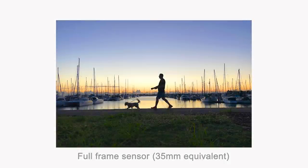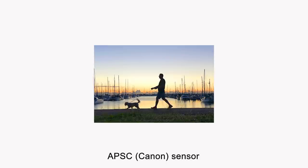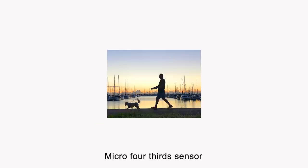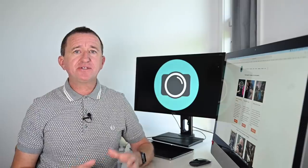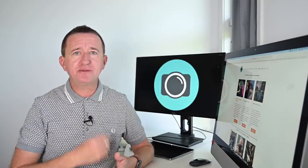With the crop factor the image is also cropped, only this time the amount of crop is determined by the size of the sensor. Sensor sizes do vary depending on the camera you're using.